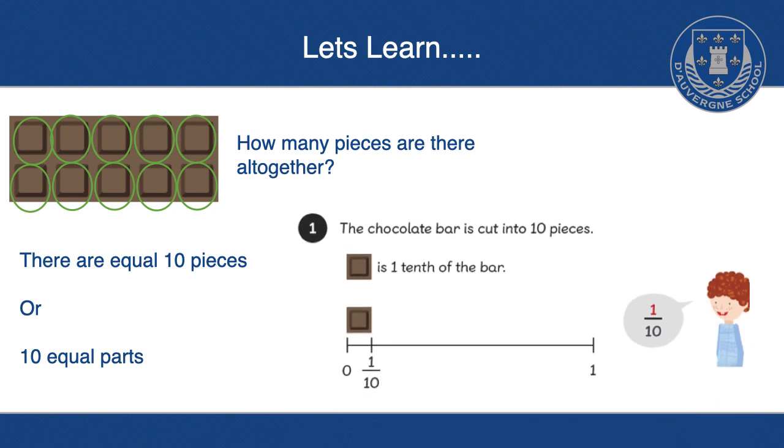So if we begin counting, it says the chocolate bar is cut into ten pieces. One of the pieces, so if we just took one of them, this is what we'd describe as one-tenth of the bar. There are ten altogether, but if we just took one of them, we'd say it's one-tenth. And as you can see, by Elliot, that's how we'd write that fraction.